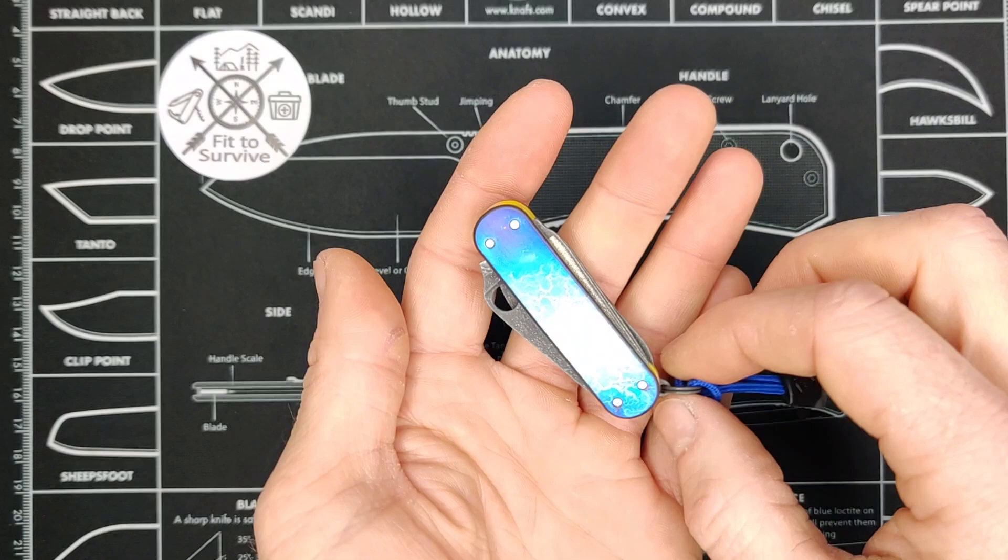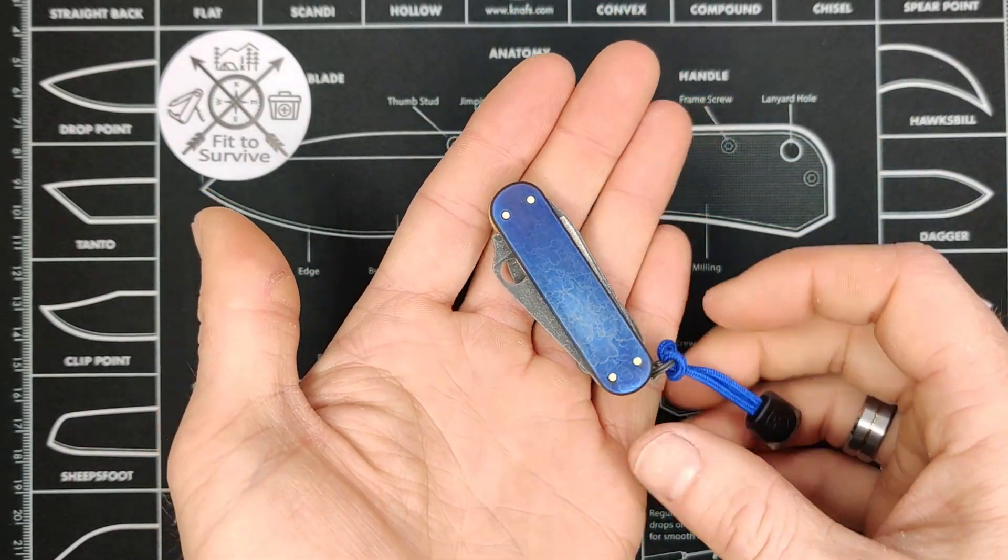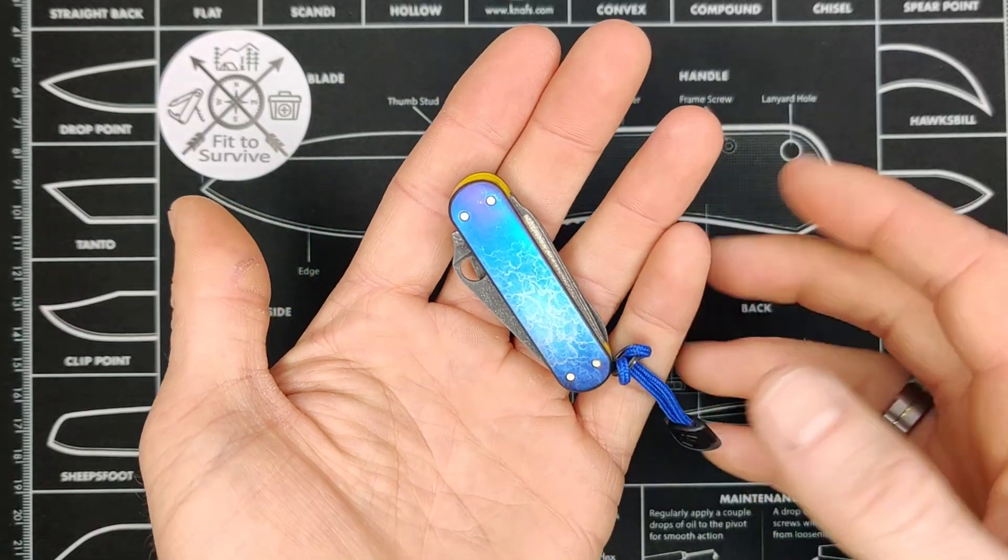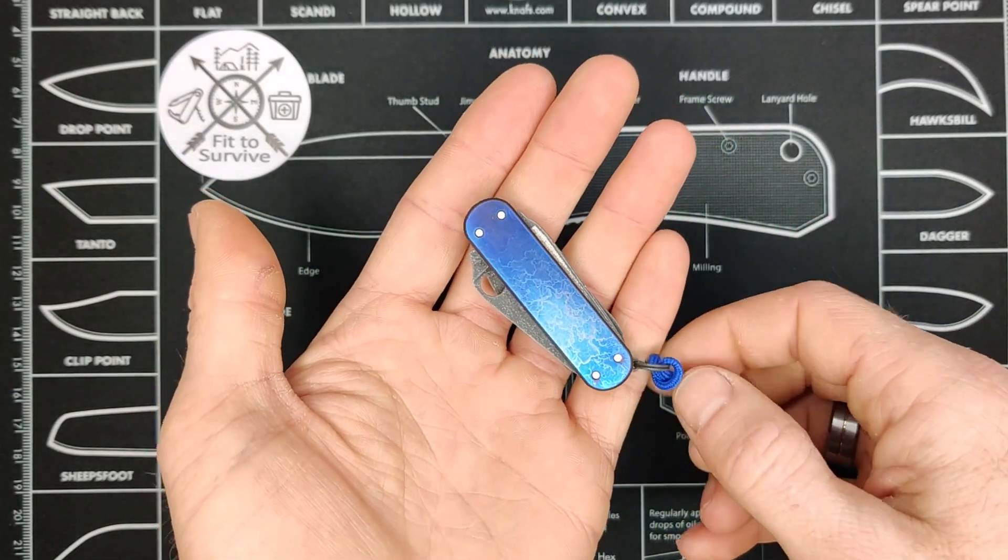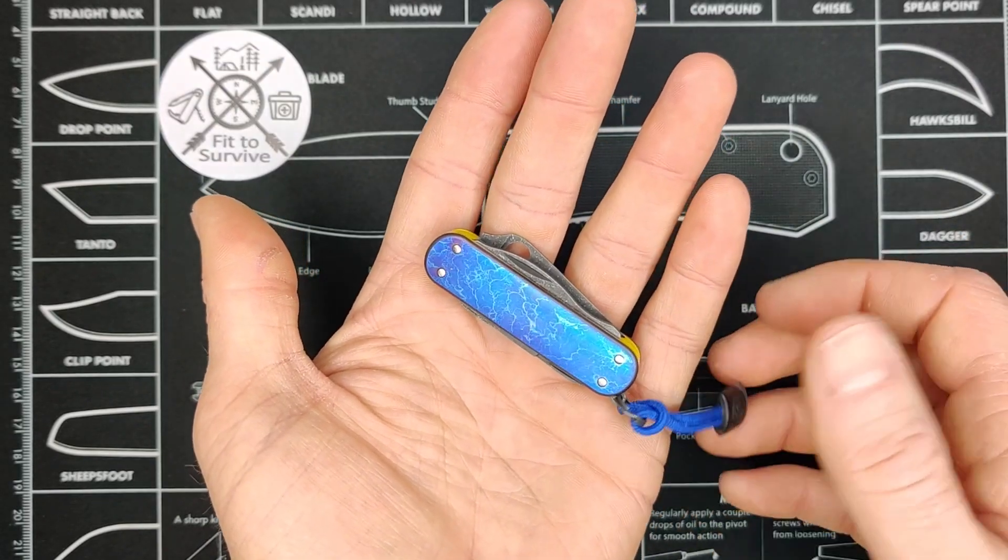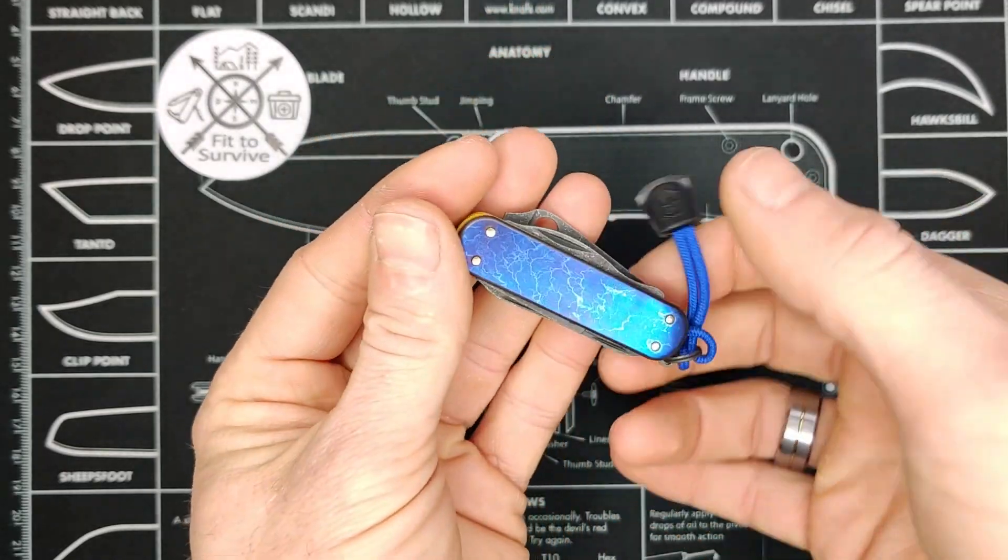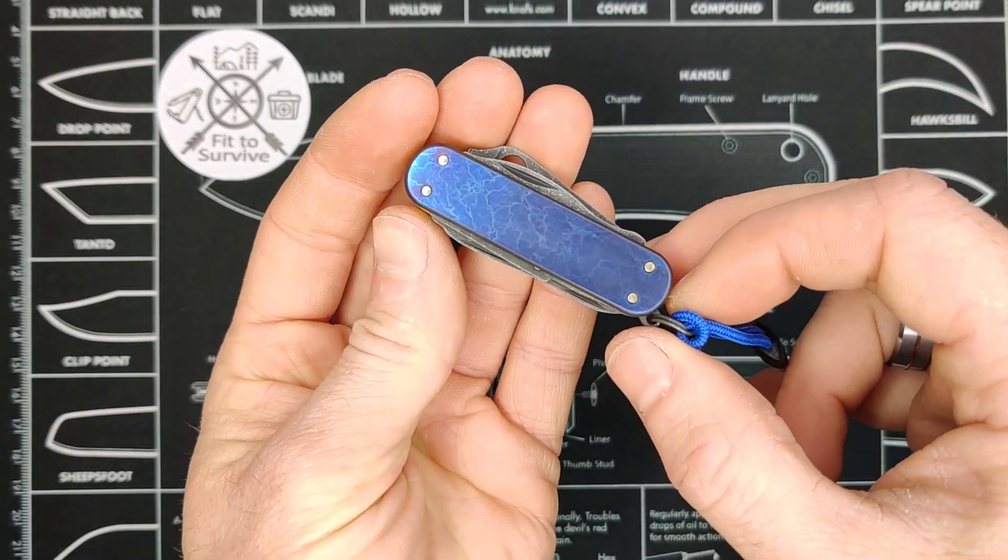I'm not exactly sure what this anodizing pattern is called. Maybe if you know, go ahead and let me know in the comments. But I asked on Instagram what people thought, and there's a bunch of interesting names out there. Some said Fire and Ice, others said Perfect Storm, Calm Seas. Anyways, I can see how it looks like lightning, so it's pretty cool like that.